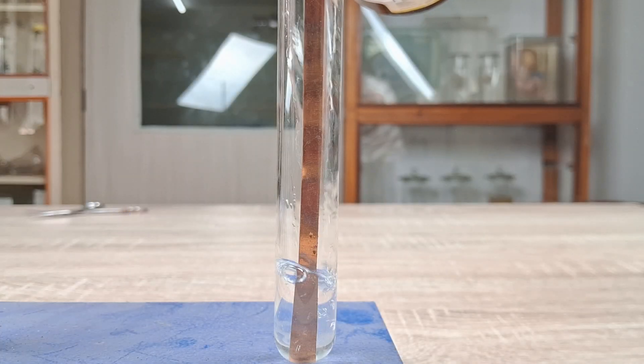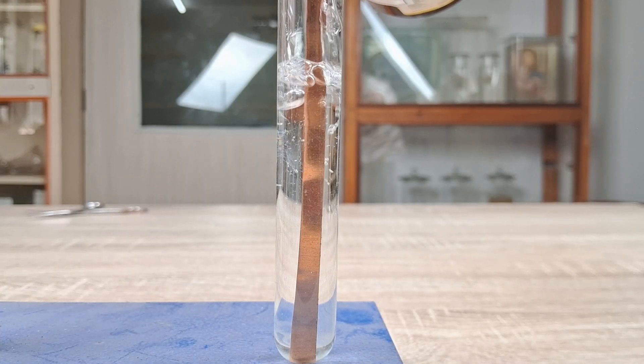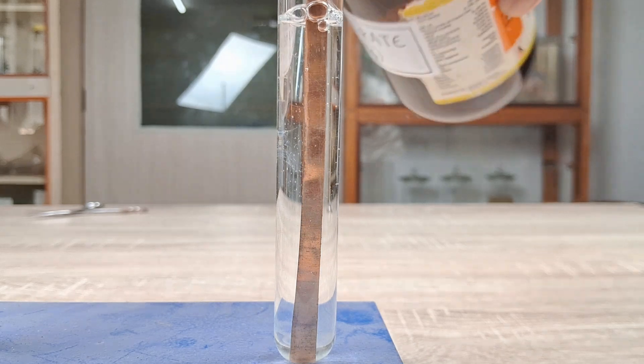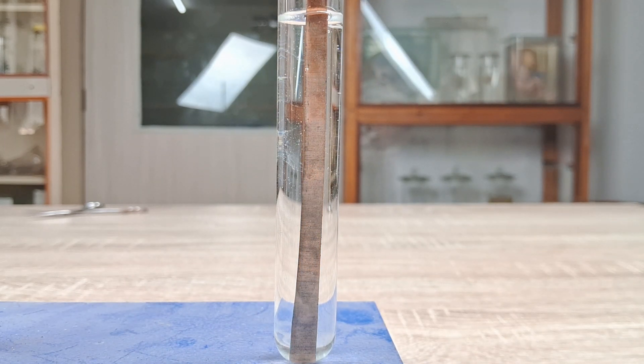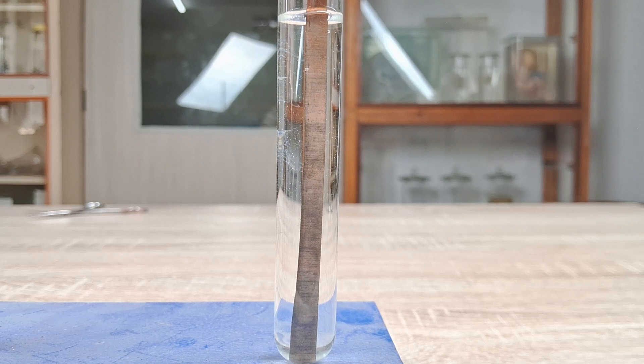First take the strip of copper and place it into the test tube. Next pour the silver nitrate solution into the test tube so that the copper strip is completely immersed in the solution.